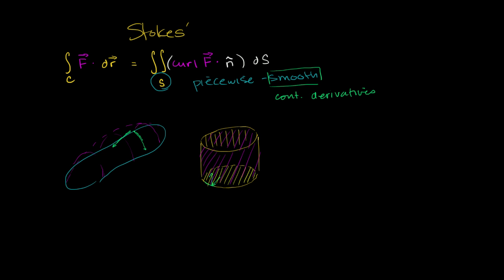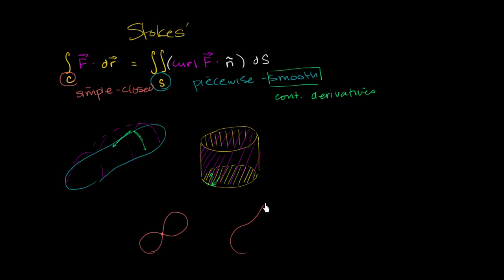We also have to care about the boundary in order to apply Stokes' Theorem. The boundary needs to be a simple, closed, piecewise smooth boundary. Simple means it doesn't cross itself — if a boundary intersects itself, it is not simple, though you could break it up into two simple boundaries. Something like this is a simple boundary. It also has to be closed, which means it just loops in on itself — it actually has to close in order to use Stokes' Theorem.